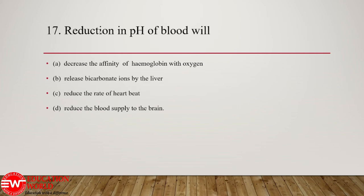Question number 17: the reduction in the pH of the blood will decrease the affinity of hemoglobin with oxygen. Reduction in pH means carbon dioxide level would be higher, because dissolution of carbon dioxide in blood produces carbonic acid, which reduces pH. This indicates more CO₂ and less O₂ in the blood. Since carbon dioxide has a higher affinity for hemoglobin in comparison to oxygen, the correct option is A.